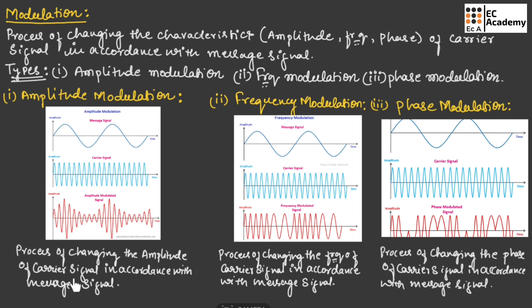In amplitude modulation, the amplitude of the carrier signal is varied with respect to the message signal, keeping frequency and phase constant — so frequency and phase will not be varied. In frequency modulation, the frequency of the carrier signal is varied, and amplitude and phase will not be varied. In phase modulation, the phase of the carrier signal is varied, and amplitude and frequency of the carrier signal are not varied. This is about modulation and types of modulation.